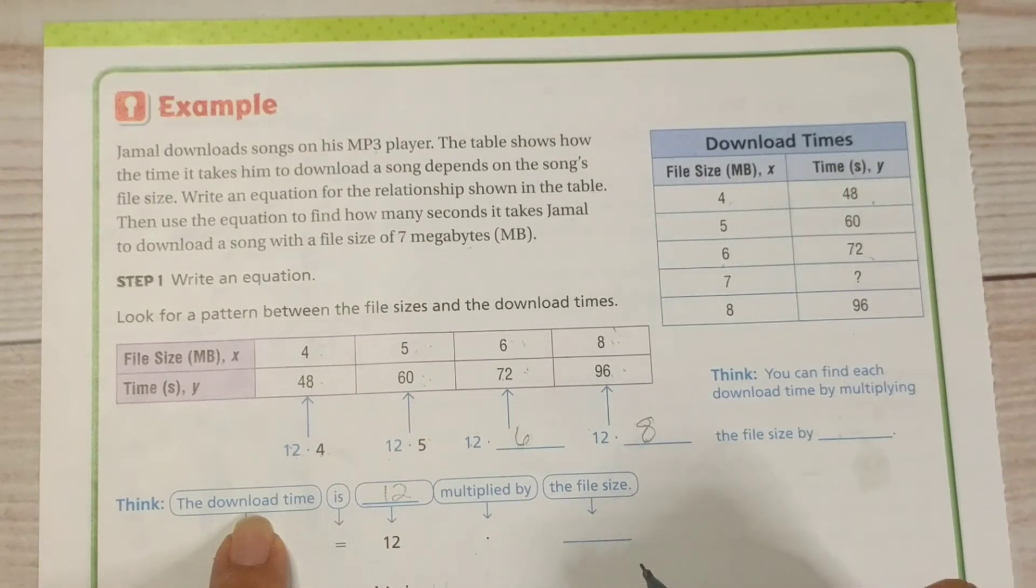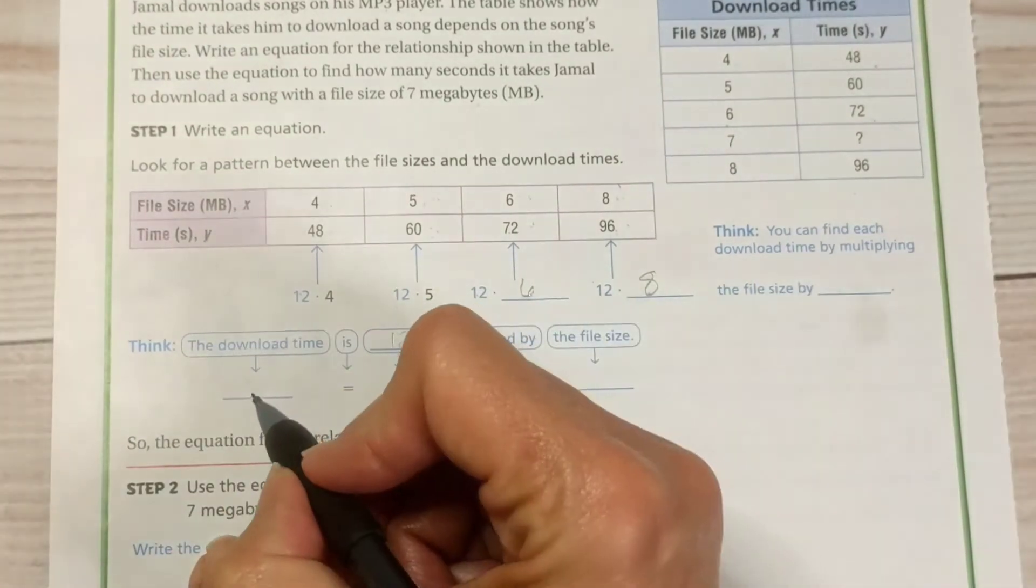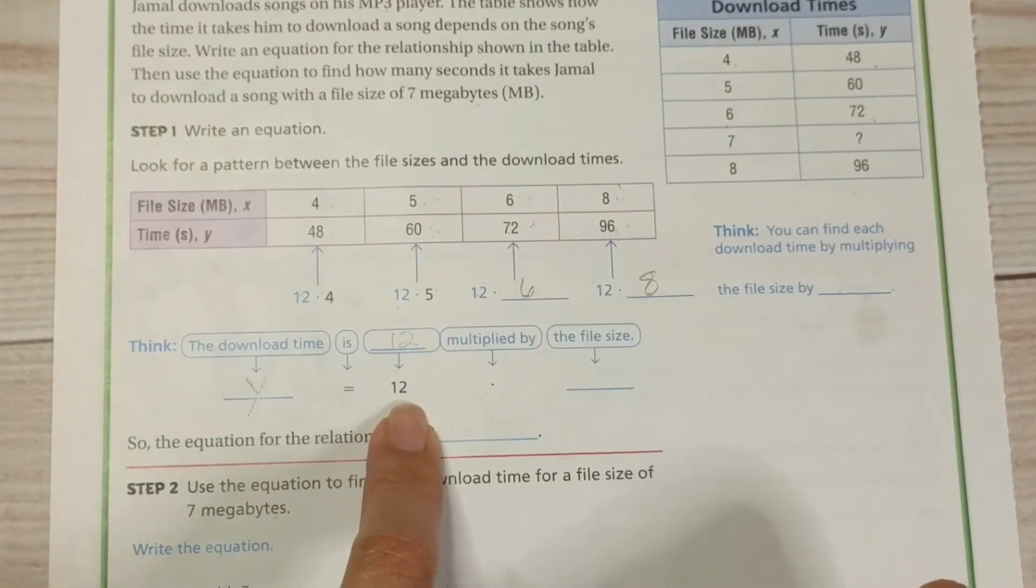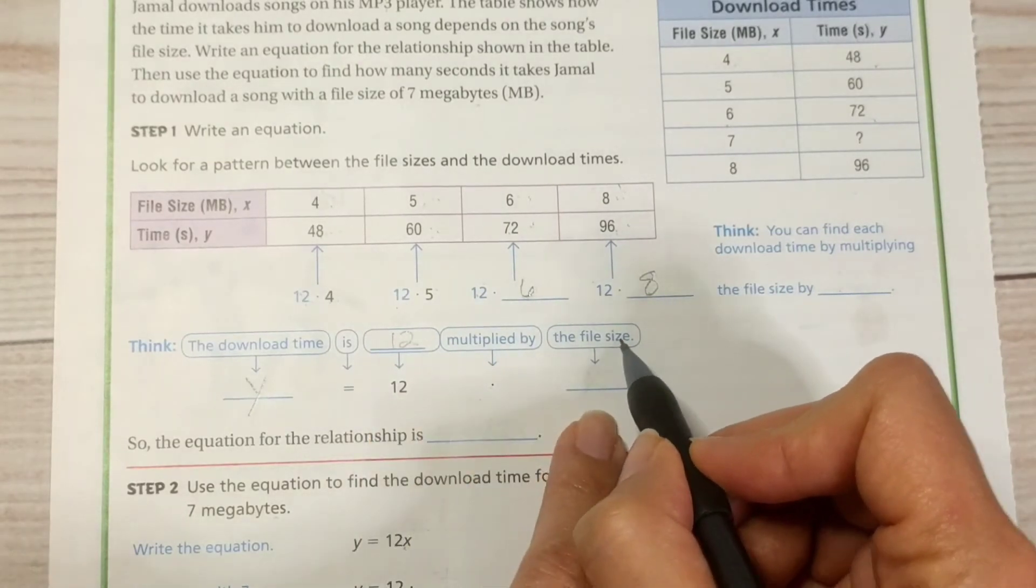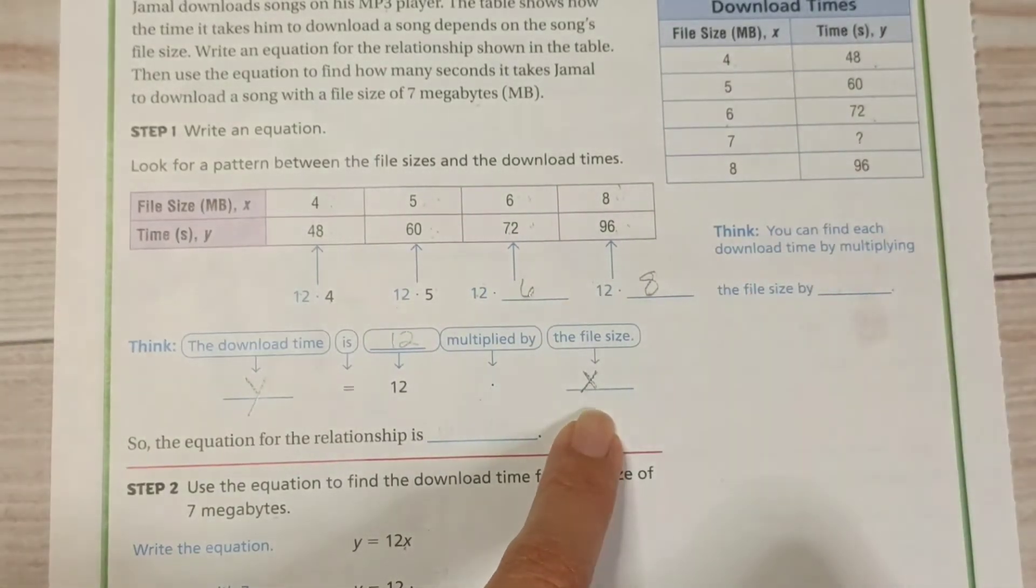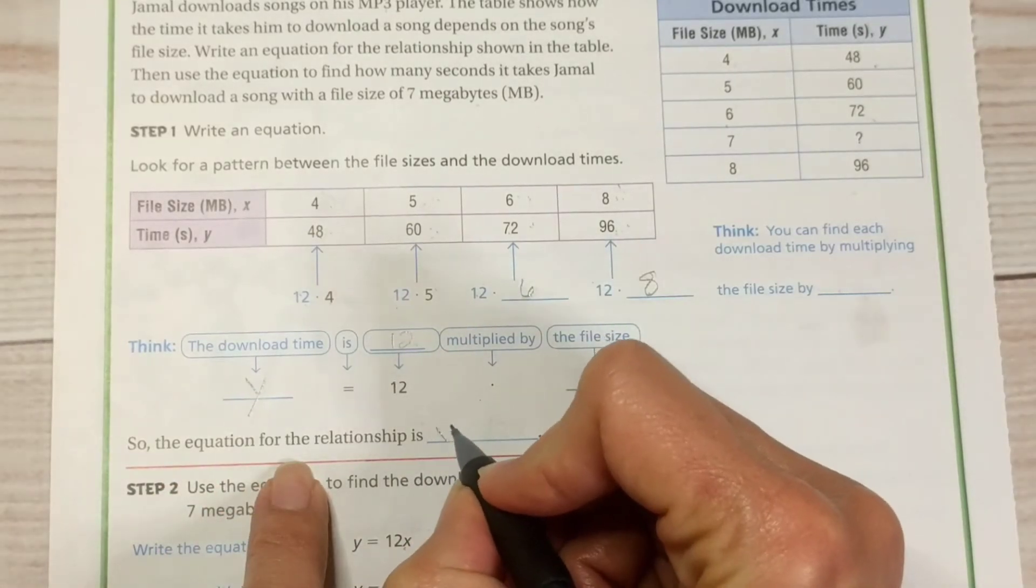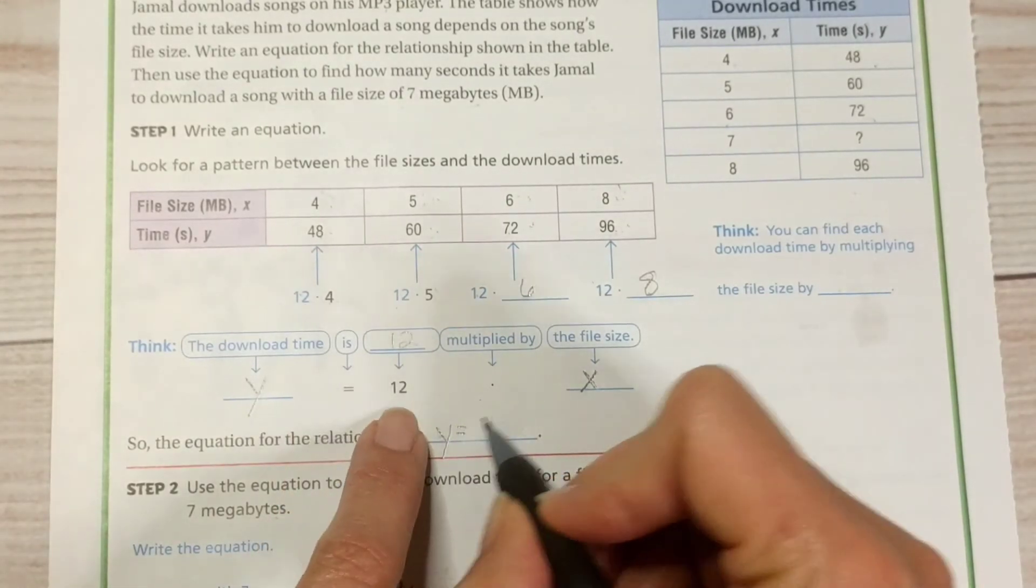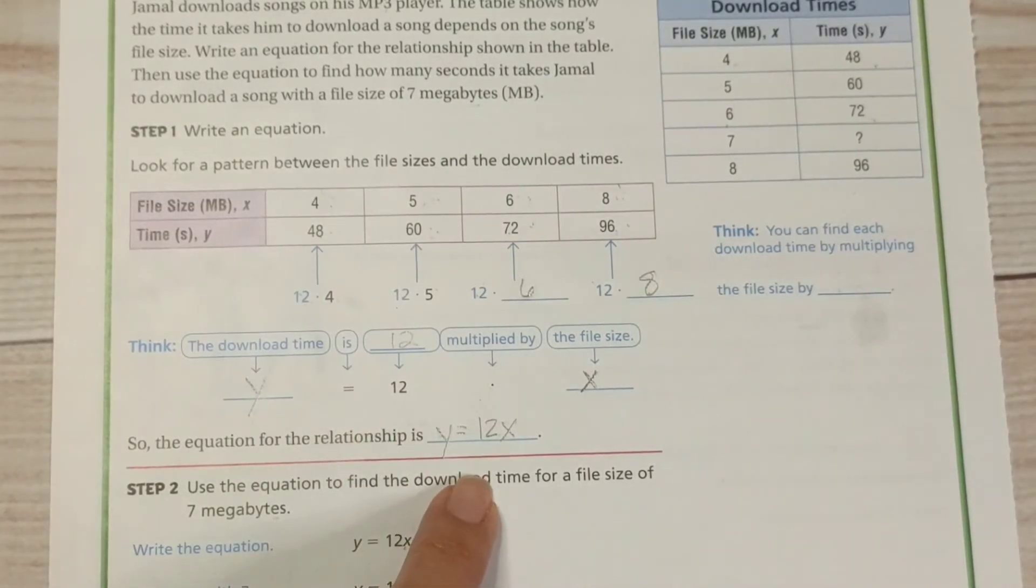All right. The download time, we don't know that yet. That's our dependent variable. So, that's Y when we're writing our equation. Y is 12 multiplied by the file size. We don't know the file size yet either. So, we're going to give that a variable of X. So, now we're going to write the equation. The equation for the relationship is Y equals 12 times X. There's our equation.